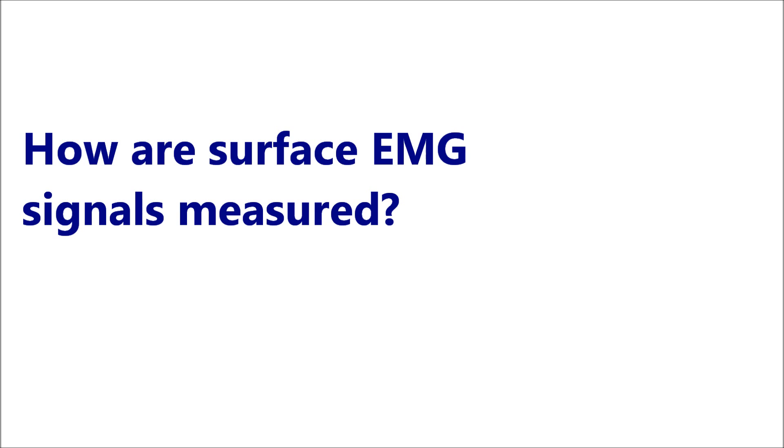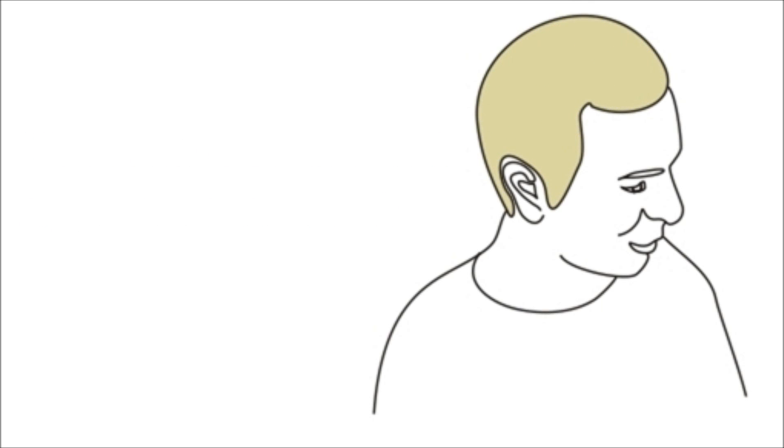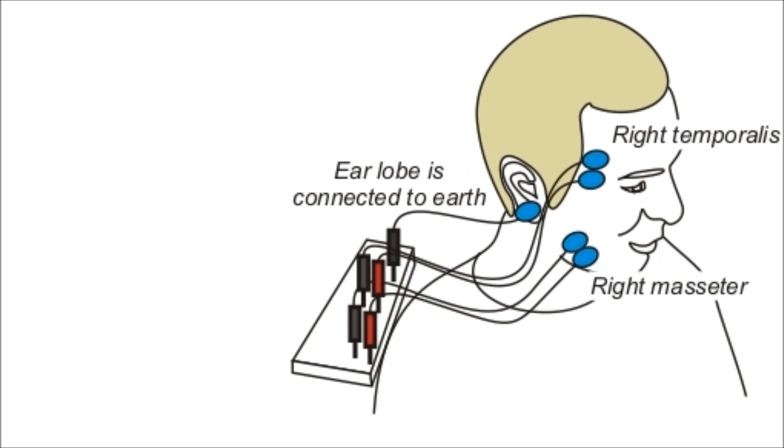Collecting surface electromyograms is non-invasive and painless. The volunteer is seated comfortably and pad electrodes are stuck to the skin using conducting gel. To study mastication, the electrodes are located in pairs over the temporalis and masseter muscles on either side of the face. The electrodes are lightweight and don't interfere with normal chewing behavior.